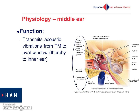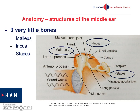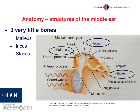Now I'll tell you more about the anatomical structures of the middle ear. As I said earlier, the middle ear consists of three important bony structures — three very little bones also called the ossicles: the malleus, the incus, and the stapes.